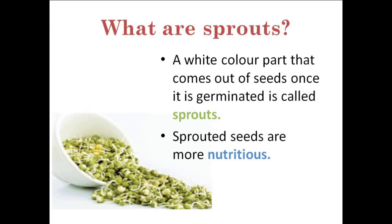Sprouted seeds are included in our diet. Some plants have more than one edible part. For example, from the banana plant we consume both the fruit and the flower. For pumpkin, we eat it as both fruit and flower. From the mustard plant, we eat its leaves as well as use its seeds for consumption. From the drumstick plant, we use its fruits, leaves, as well as flowers.